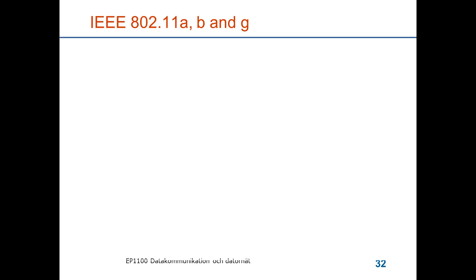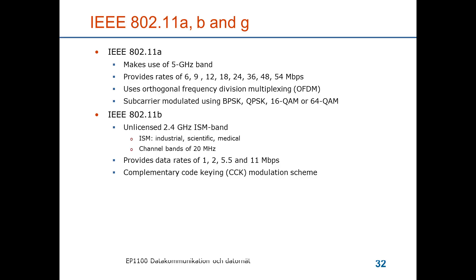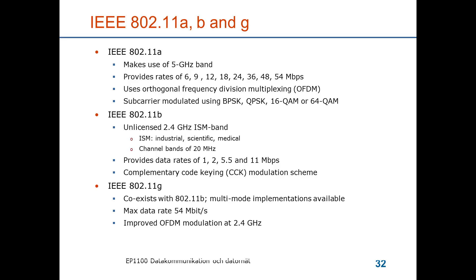The 802.11 standard has several subgroups. 802.11a uses the 5 GHz band, providing rates from 6 Mbps up to 54 Mbps using advanced modulation and coding. 802.11b was the standard that made Wi-Fi popular, using the 2.4 GHz ISM band with 20 MHz channels and data rates from 1 to 11 Mbps. The most common standard today is 802.11g, which coexists with 11b in the 2.4 GHz band but achieves up to 54 Mbps using orthogonal frequency division multiplexing.